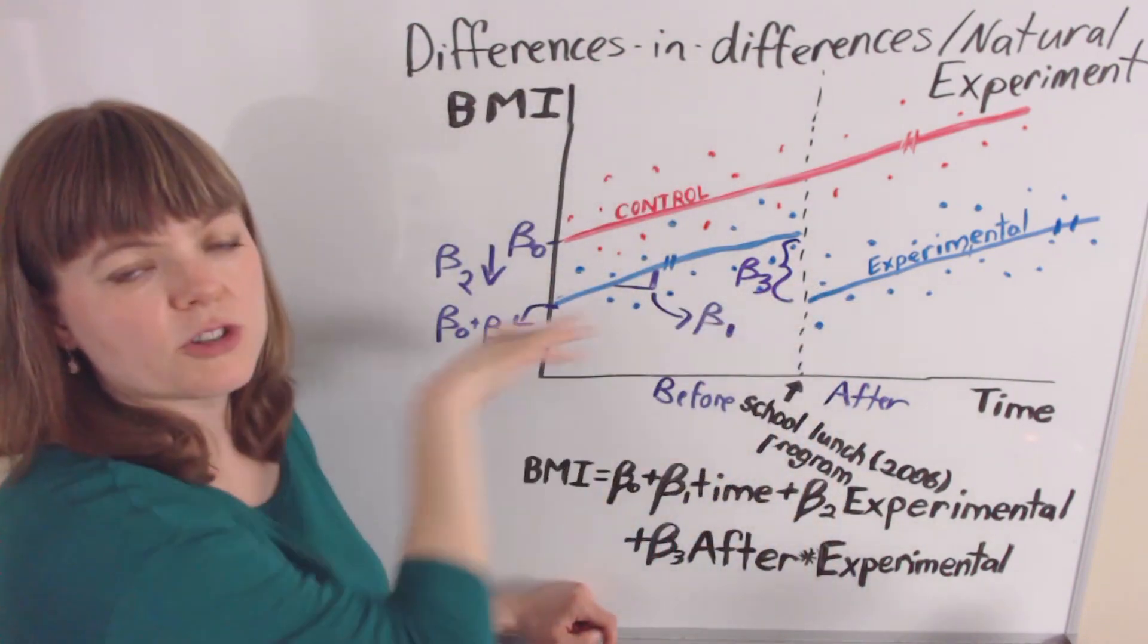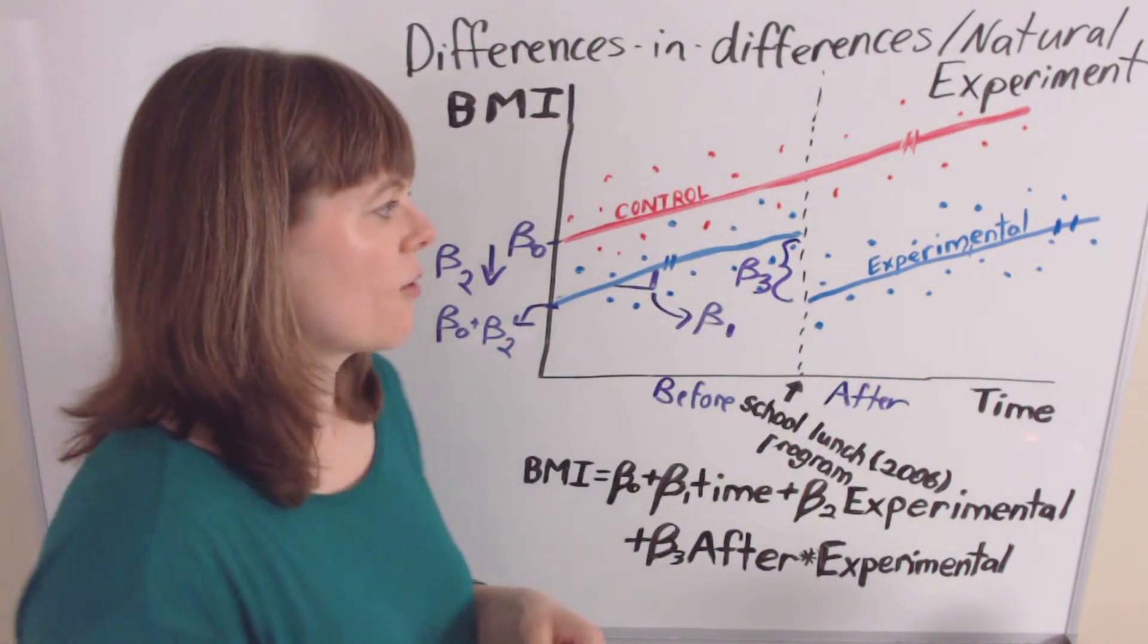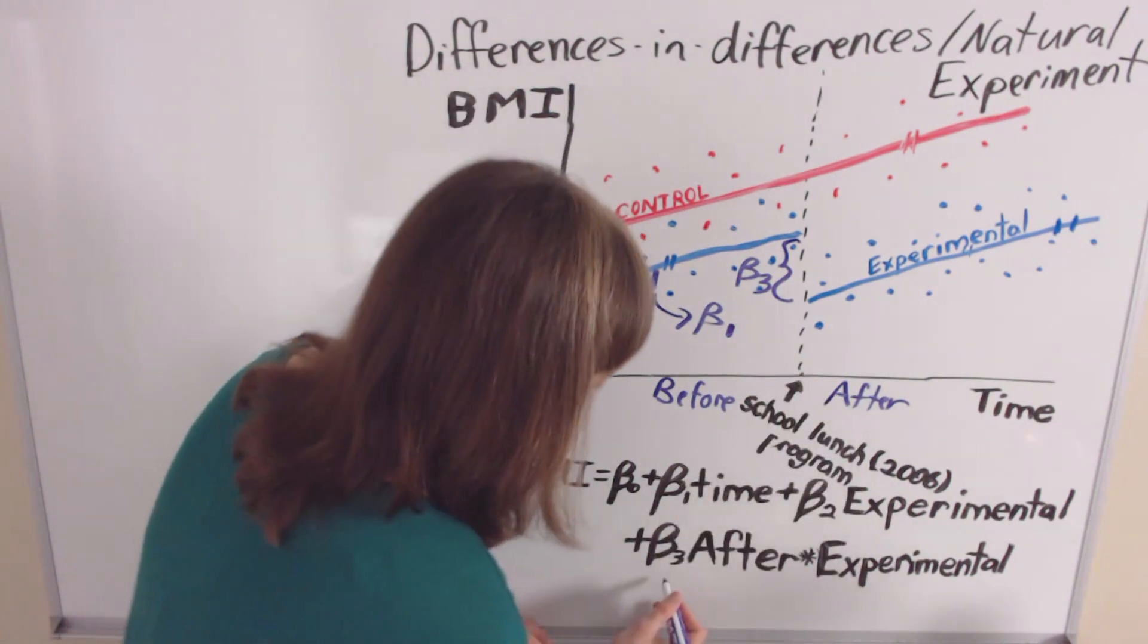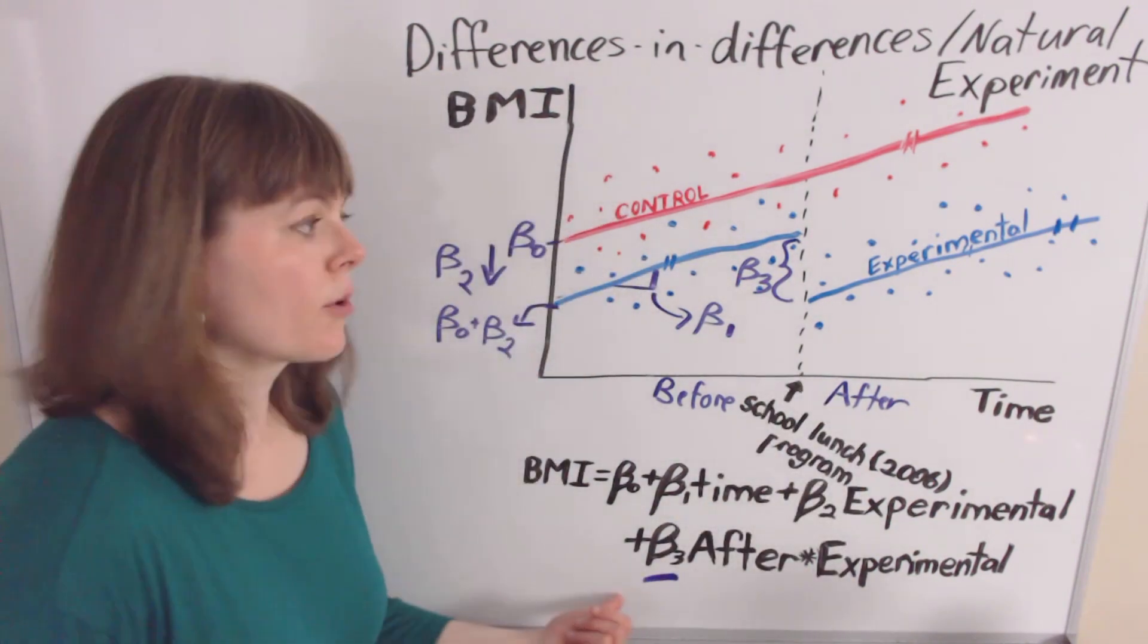And of course, if we wanted, we could project that back onto this axis. I'm not going to do that for now. But of course, beta 3 is the main causal variable at play.